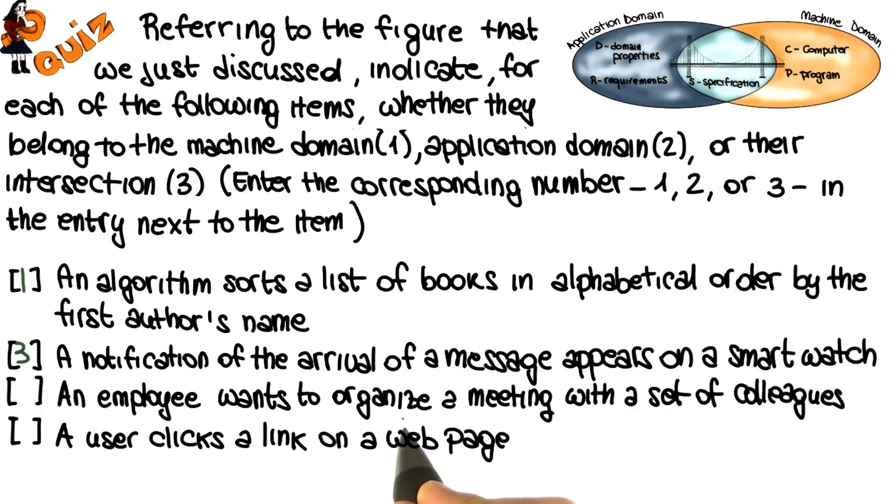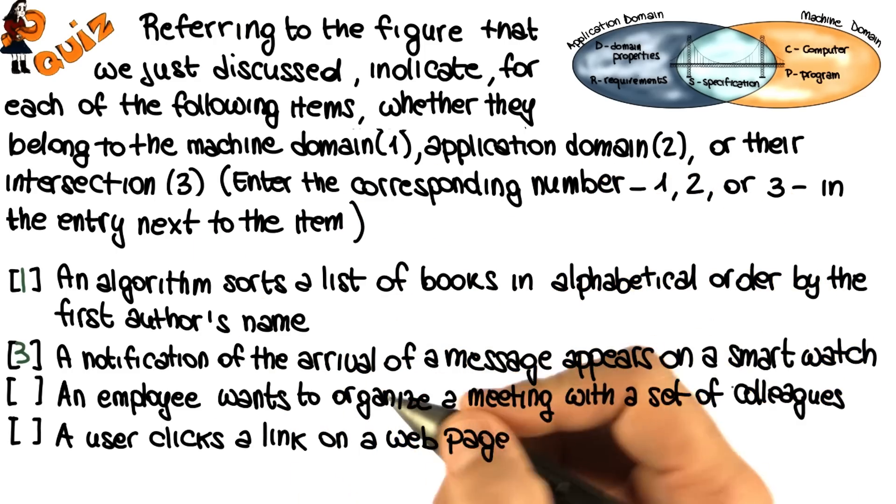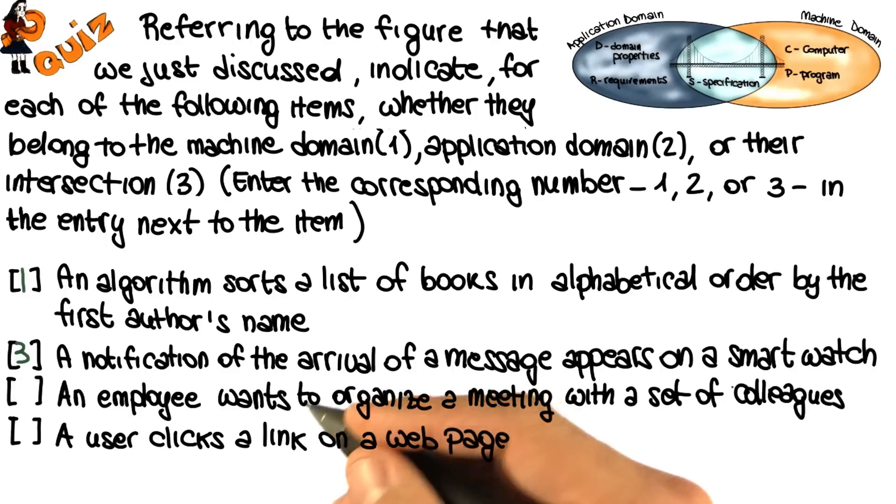What about an employee that wants to organize a meeting with a set of colleagues? This is an event that belongs to the application domain because it is a fact that exists in the real world, independently from the existence of a machine. Therefore, we're going to mark this as two.